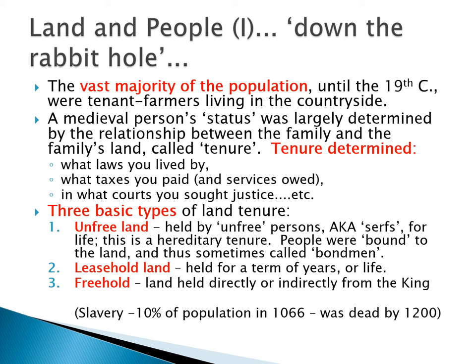Freehold tenure is when you hold land directly or indirectly of the king for a cash rent. This most closely approximates what we today would call property ownership — as long as you keep paying your taxes on the property, you cannot lawfully be displaced from it. You also have the right to sell that property or to pass it on through a will to designated heirs.